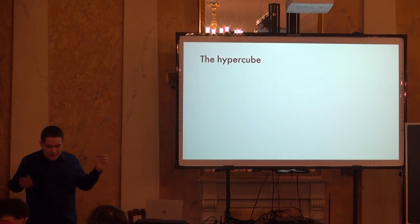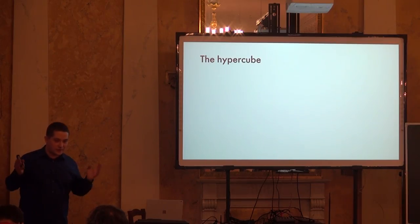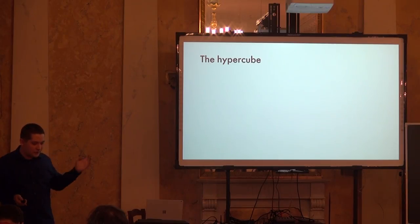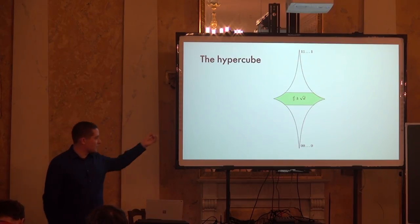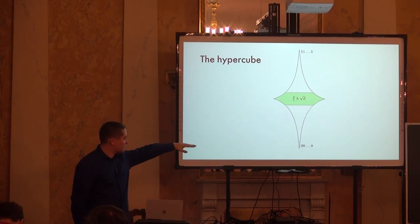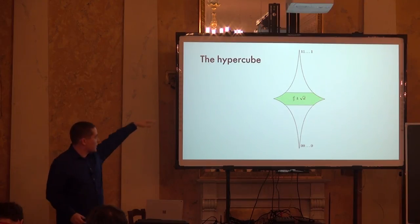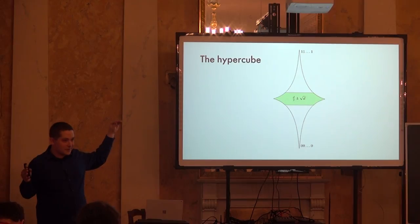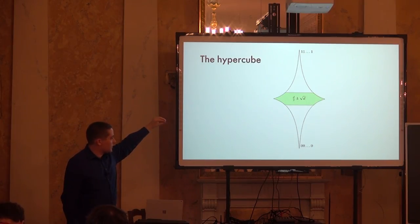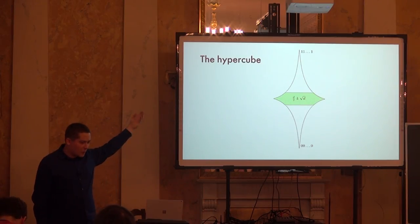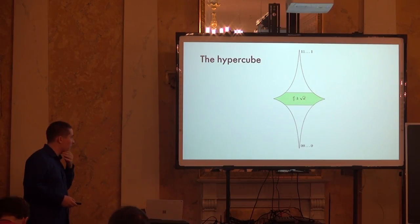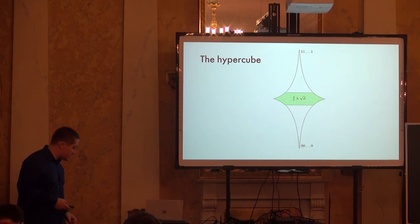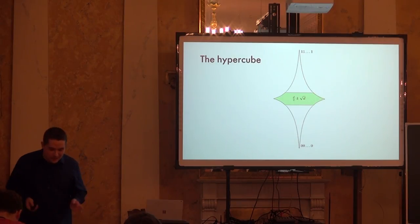Another way to think about this: consider the hypercube — the set of binary strings of length D. The concentration result means that almost all vectors in the hypercube have D/2 ± √D ones — they are concentrated in the middle layers. The bottom (all zeros) and top (all ones) each contain only a single vector. This is the right depiction of the hypercube: almost everything lives in the middle.